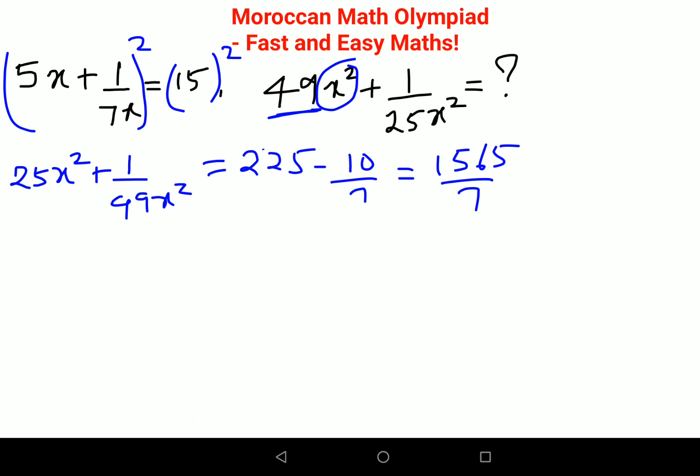Okay, now your problem is that you need a 49 on top and 25 in the denominator. So in this case, what we will do is we will multiply both sides by 49 upon 25.